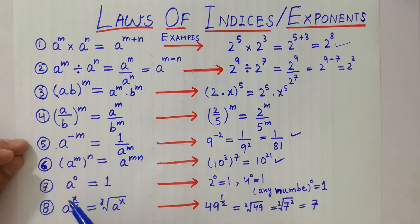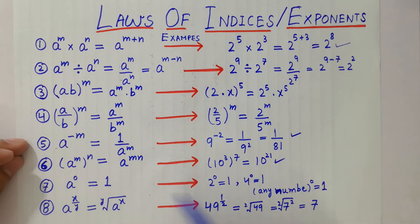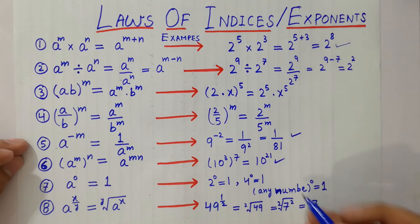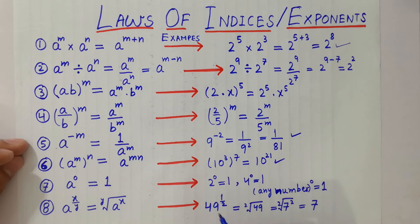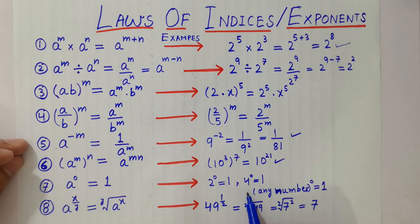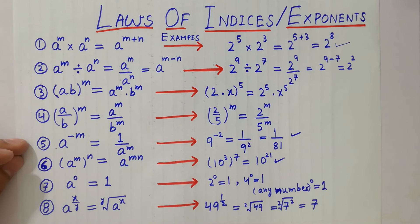A raised to the power 0 is always equal to 1, because any number raised to the power 0 equals 1. For example, 2 raised to the power 0 is equal to 1, 4 raised to the power 0 is equal to 1, and so on.